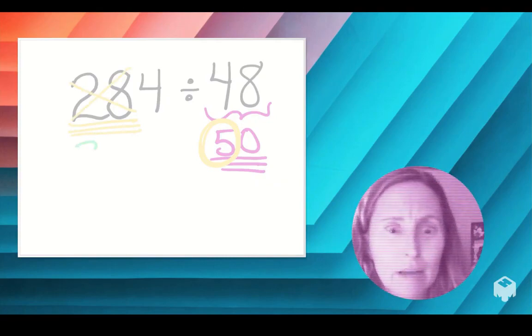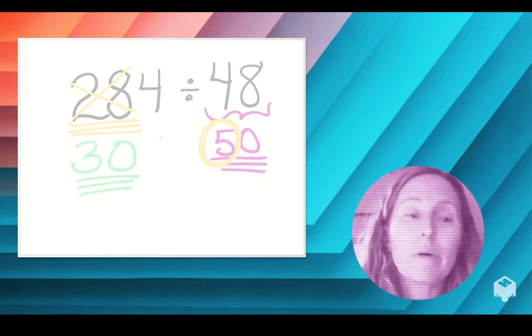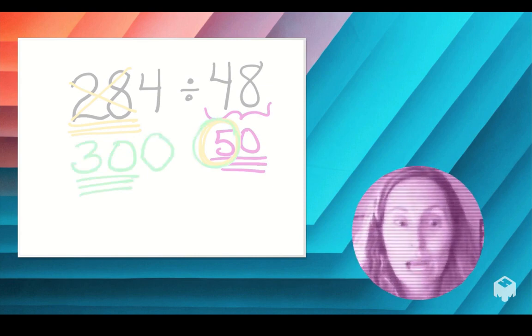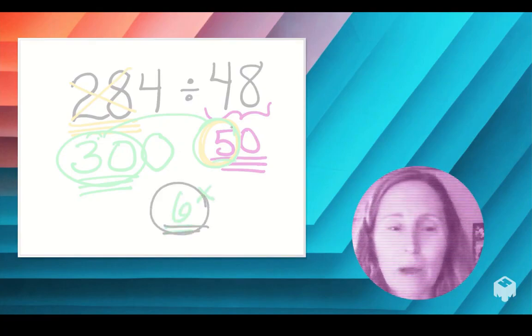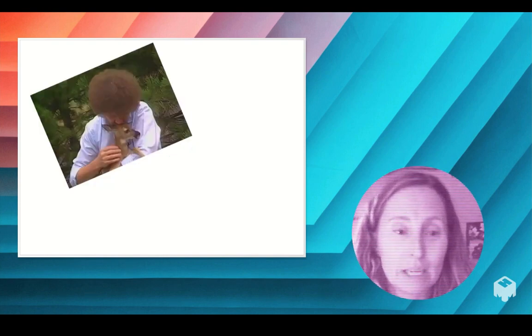And now I look over at 5 and I think, hmm, 28 is not compatible with 5. But you know what is? 30. So I'm going to change 284 into 300 just so that these numbers can get along with each other and I can get a quick little estimate.